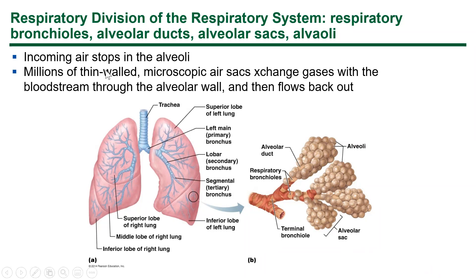Alveoli are very thin-walled. The Fick diffusion equation places diffusion distance in the denominator, so the smaller the diffusion distance, the faster diffusion will occur — and that's what we want here. Each of these alveoli — not pictured here, but you can imagine it — has a capillary bed wrapped around it.